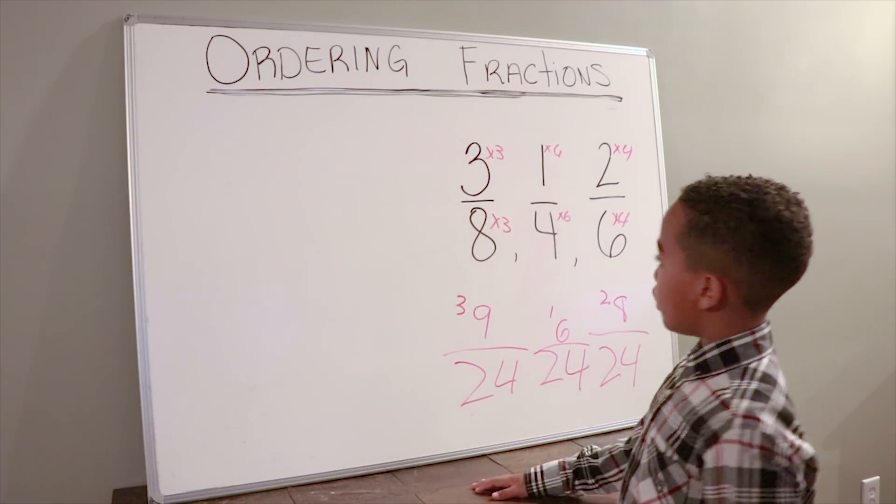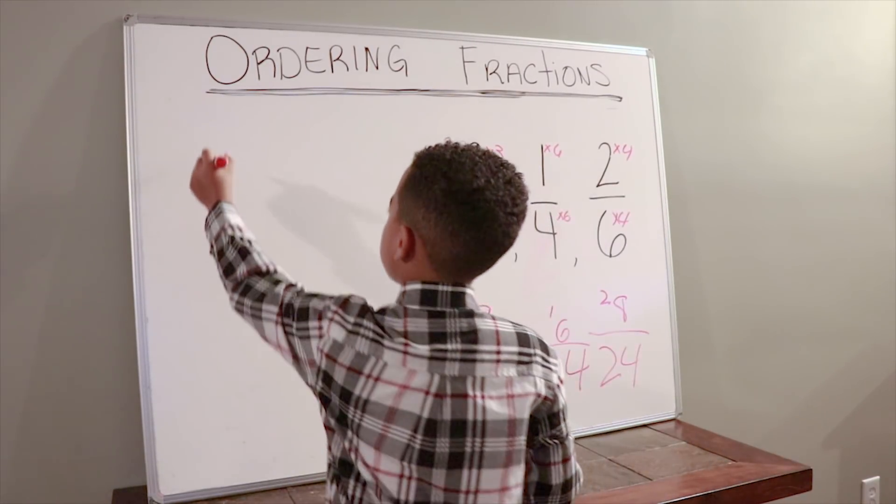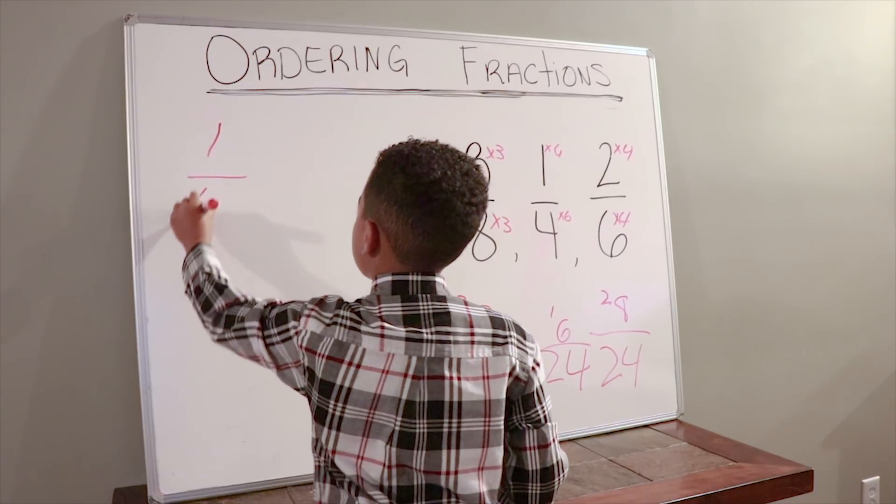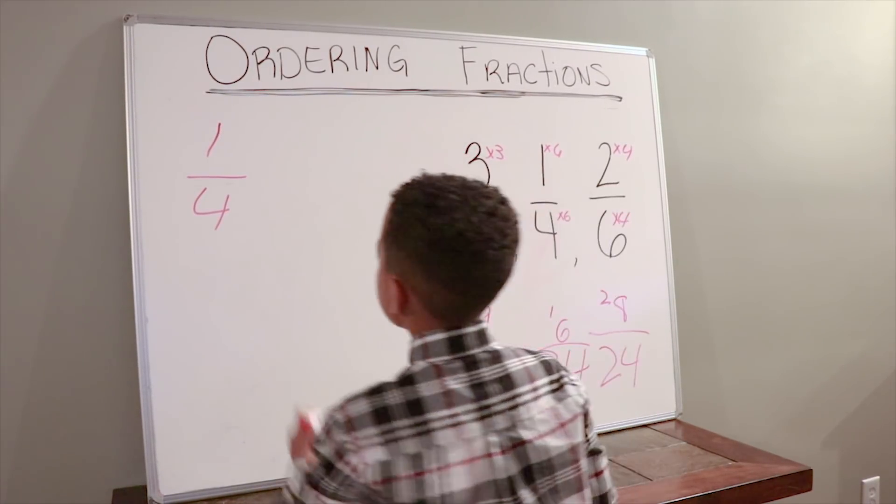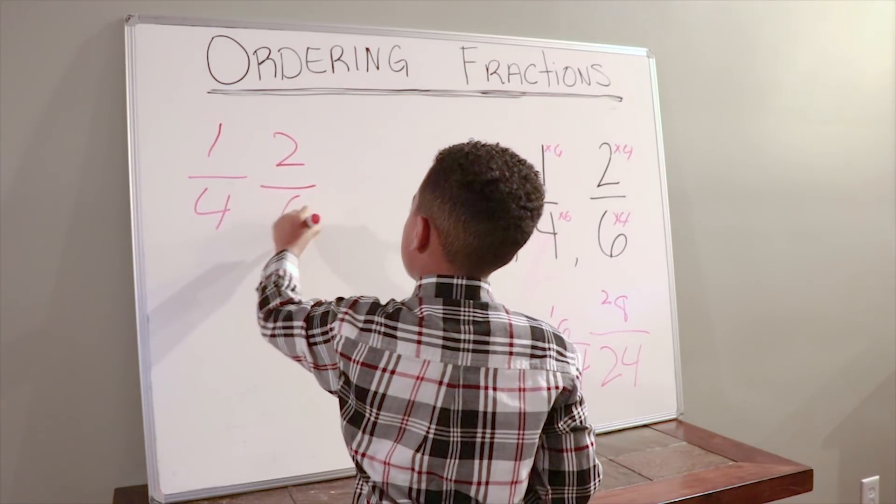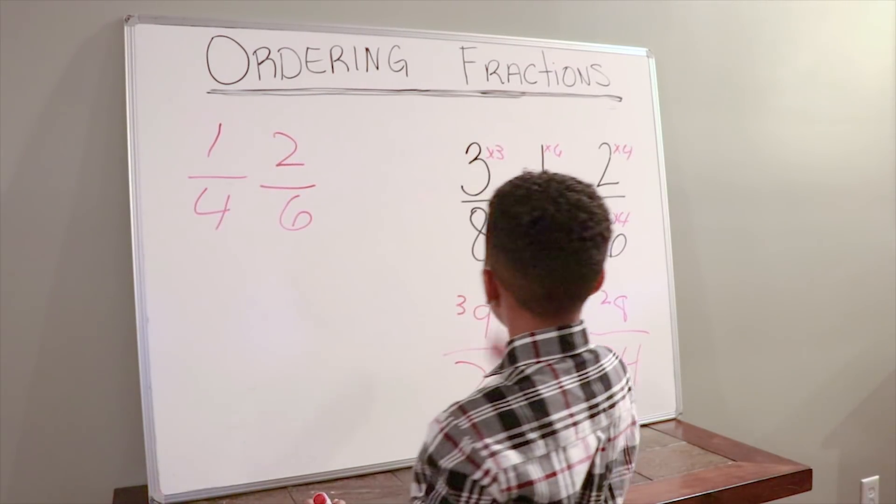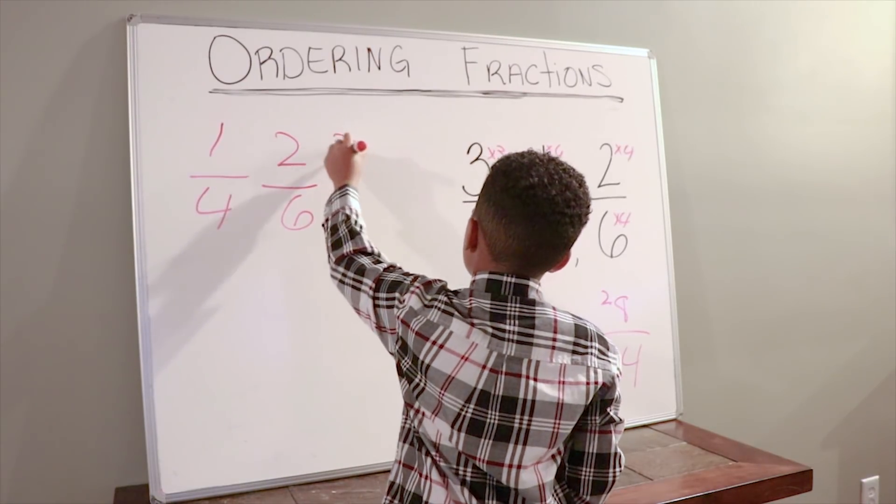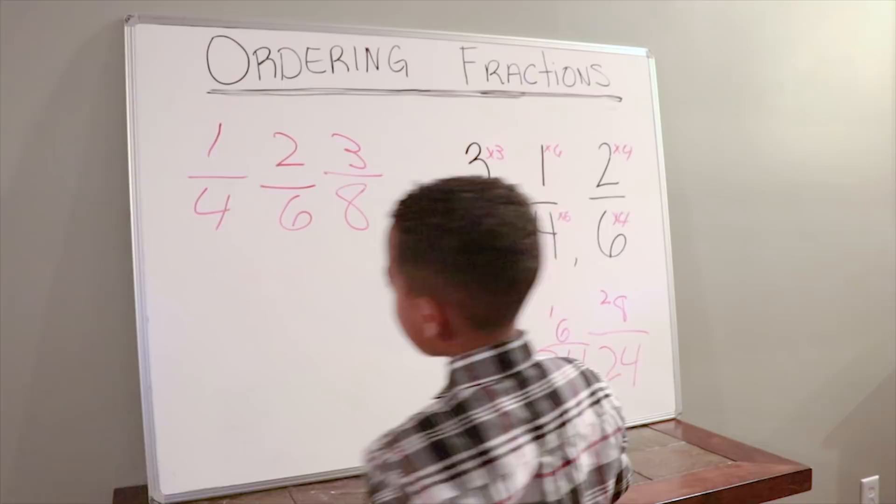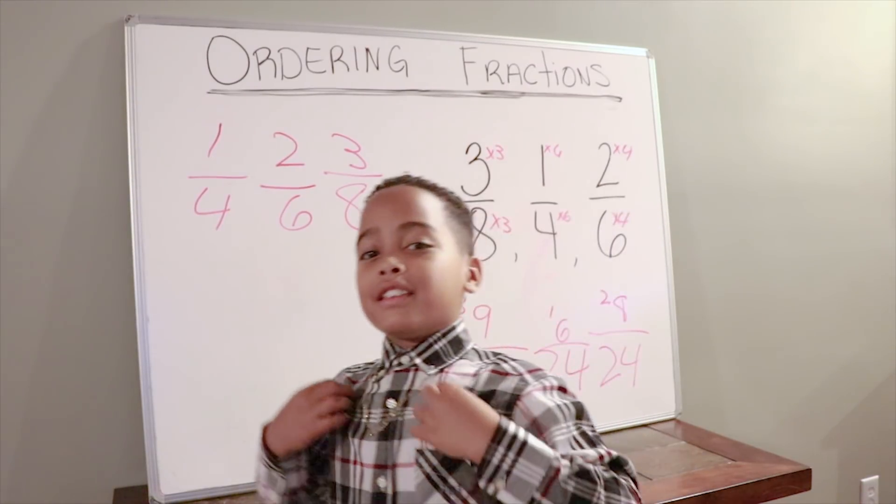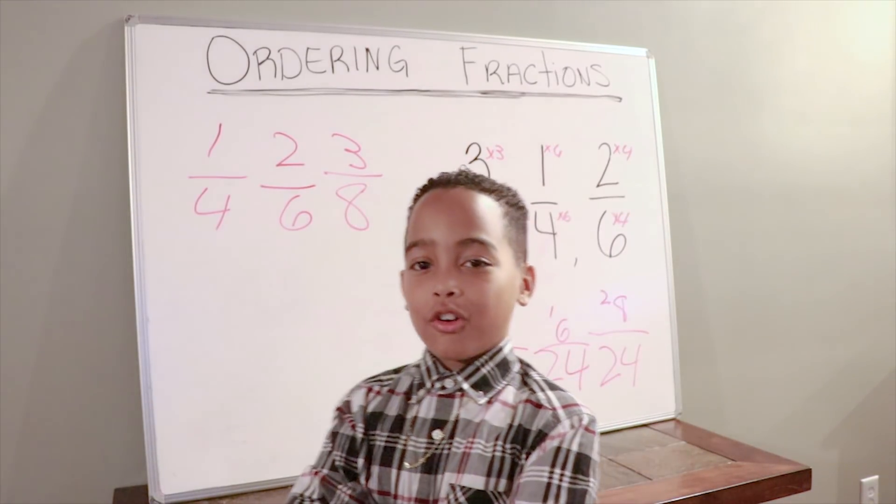We're going to now put them in order. 1 fourth, and second is 2 sixths, and the third is 3 eighths. Now that's how you order a fraction.